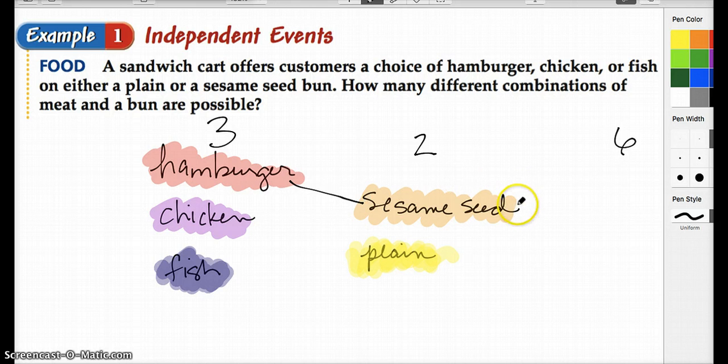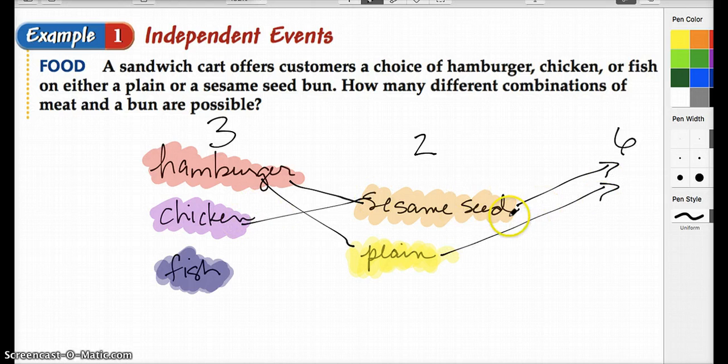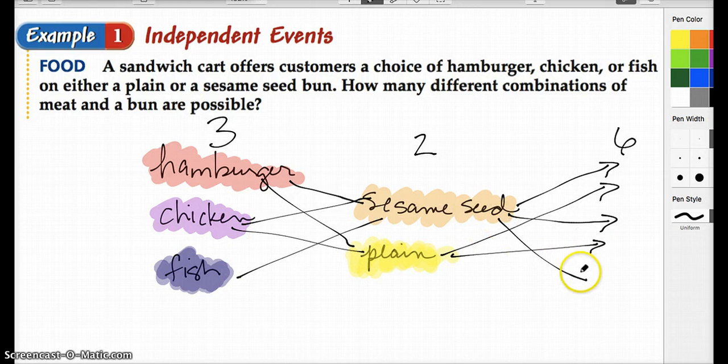Hamburger and sesame seed, that's one choice. Hamburger and plain, that's another choice. Chicken and sesame seed, that's yet another choice. Chicken and plain, another choice. Fish and sesame seed, and fish and plain. And then you see, we have six different choices.